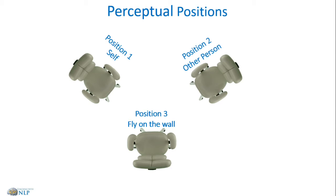Well, perceptual positions actually involve shifting your viewpoint and viewing a specific internal representation from three different positions. The first position is looking through your own eyes.